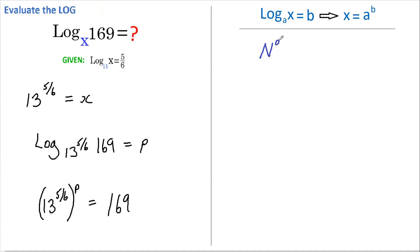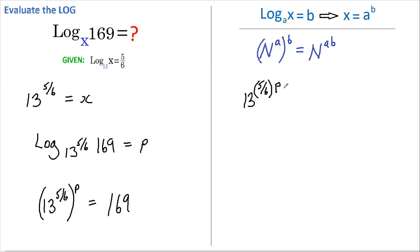Now there's another rule that says if we have a number raised to a power and that's all raised to another power, we can rewrite this as the original number raised to those two powers multiplied together. We can therefore write the left-hand side as 13 to the power of 5 divided by 6 multiplied by P, and the right-hand side still equals 169, which I'm going to rewrite as 13 squared.